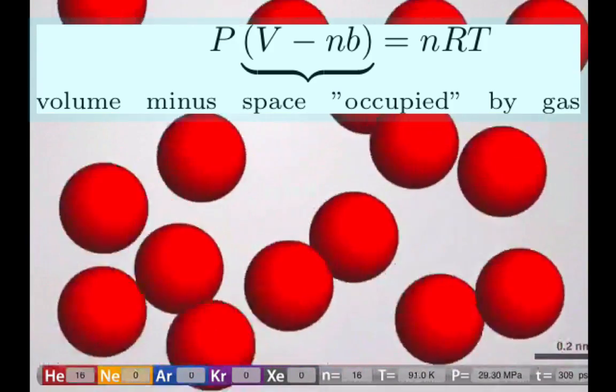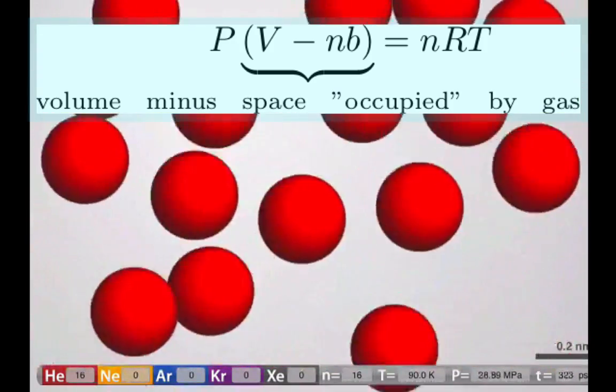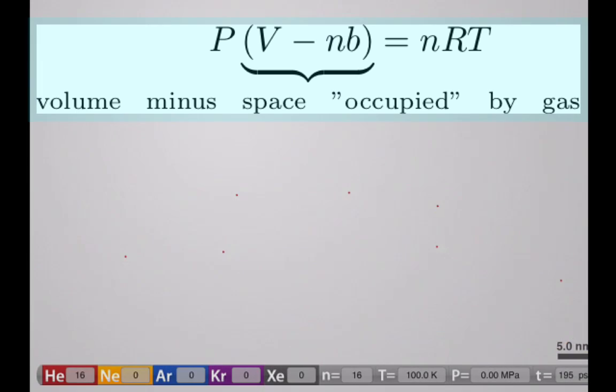Now there are two situations to think about. One is our situation where we have very low pressures. If we go back to low pressures, what we see is that the molecules are really far apart and they're essentially very tiny because they occupy an incredibly small volume. So V is very large compared to nb. In this case that little nb correction doesn't matter, and we go back simply to the ideal gas equation. At low pressures the ideal gas equation works beautifully.